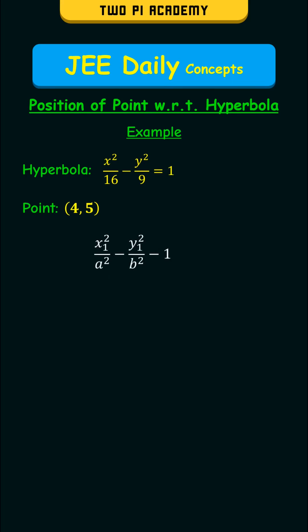By substituting the corresponding values in the formula and simplifying, we get the value less than 0. So therefore, the point is in the exterior region of the hyperbola.